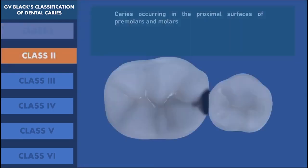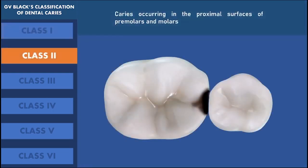Now let's see what is class 2 dental caries. Class 2 dental caries is those caries which are occurring in the proximal surfaces of premolars and molars. Often the marginal ridge may be intact in some cases, but once it spreads, it will include the marginal ridges. Class 2 dental caries is often associated with food impaction. Diagnoses of class 2 dental caries are often missed with clinical examination, and a good quality radiograph will give a clear insight for diagnosis.